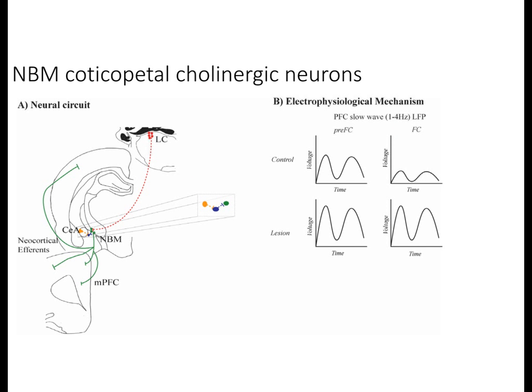NBM corticopetal cholinergic neurons are typically targeted using toxins directed at the P75 receptor, as these are the only neurons in the basal forebrain expressing this receptor. These neurons are critical for fear memory in the conditioned suppression paradigm, but not in the Pavlovian paradigm or fear potentiated startle. In the inhibitory avoidance paradigm, some reports suggest these neurons inhibit fear memory formation, while others report they are critical for the modulatory effects adrenal hormones have on fear memory formation. We show neural circuits and electrophysiological mechanisms in panels A and B.